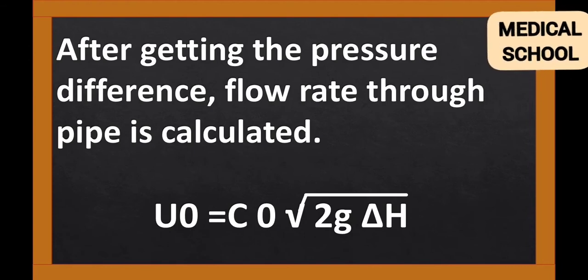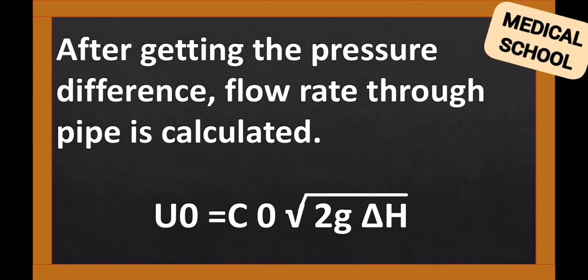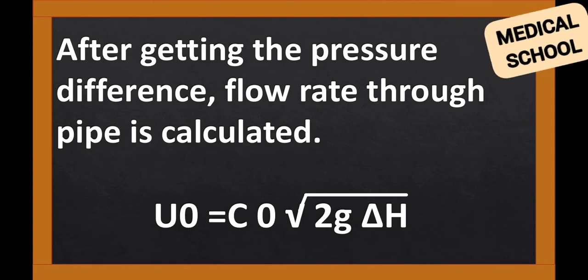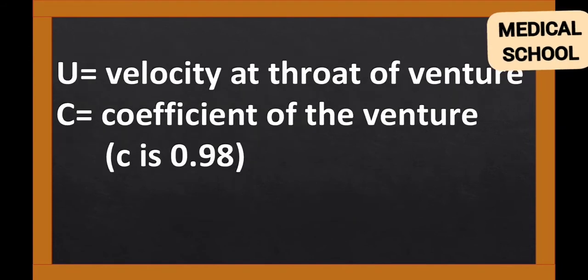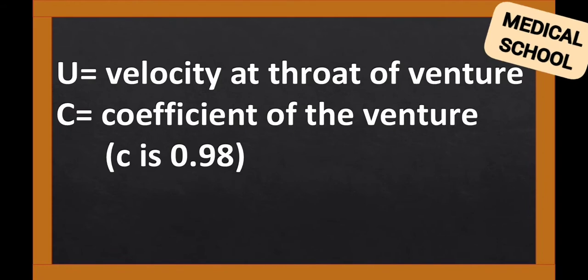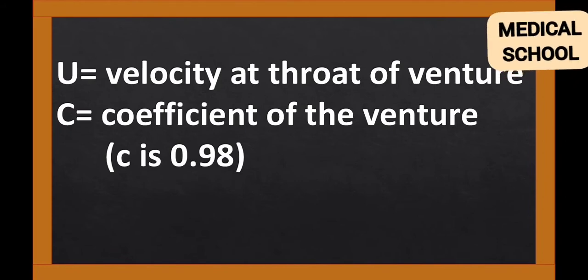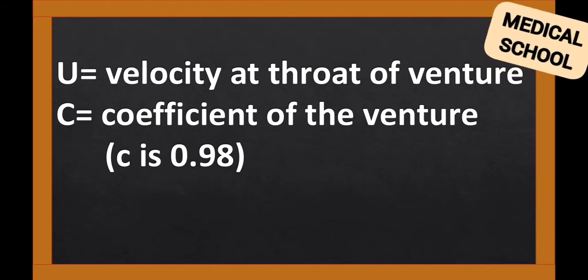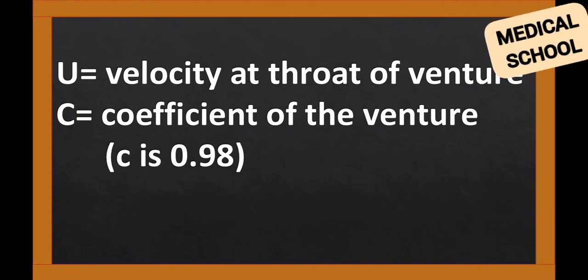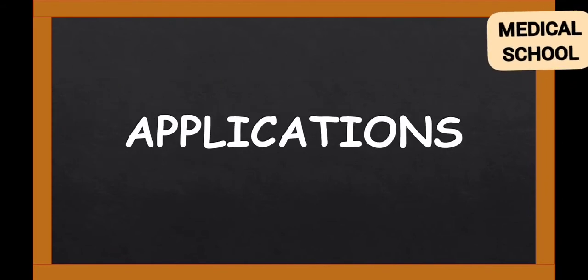The formula is: U = C × √(2G × ΔH), where U is the velocity at the throat of the Venturi, and C is the coefficient of the Venturi.